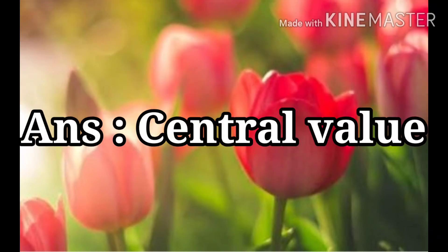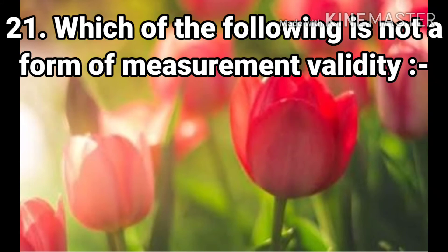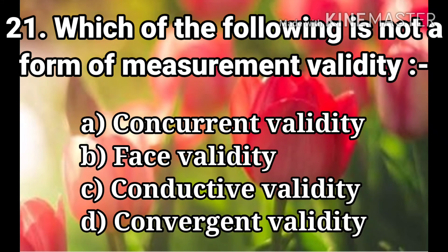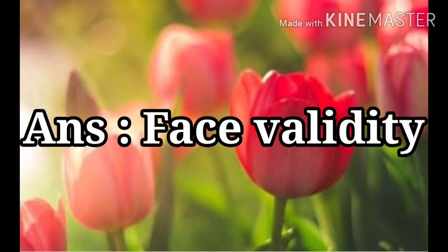Question 21: Which of the following is not a form of measurement validity? The options are Concurrent Validity, Phase Validity, Conductive Validity, and Convergent Validity. The answer is Phase Validity.